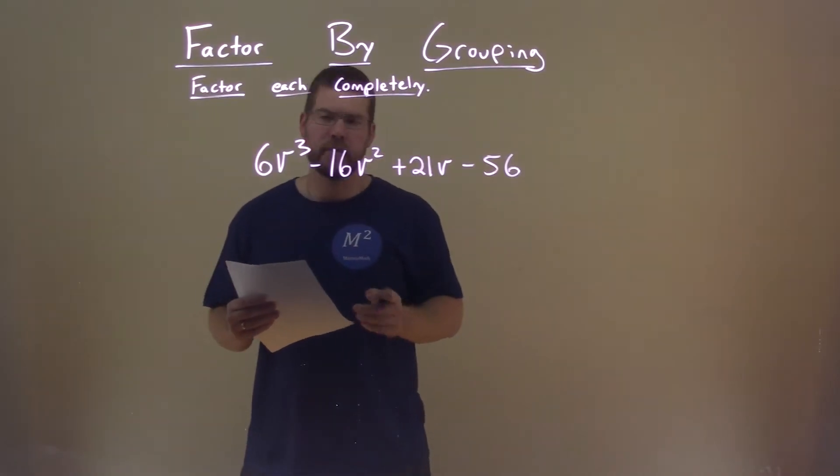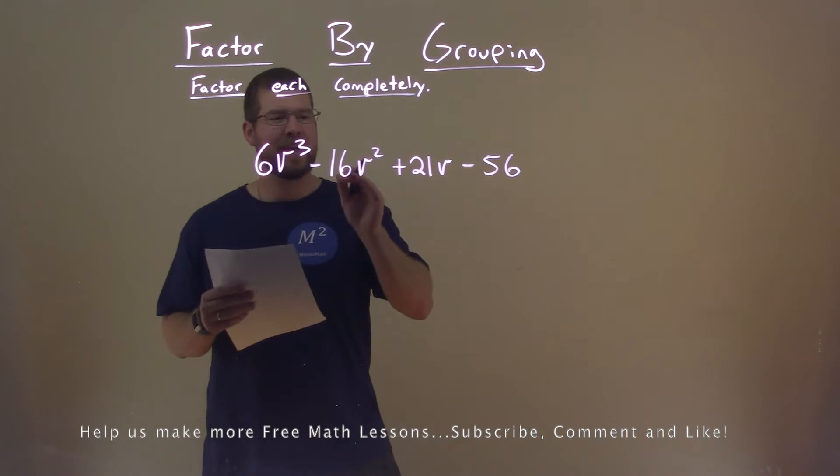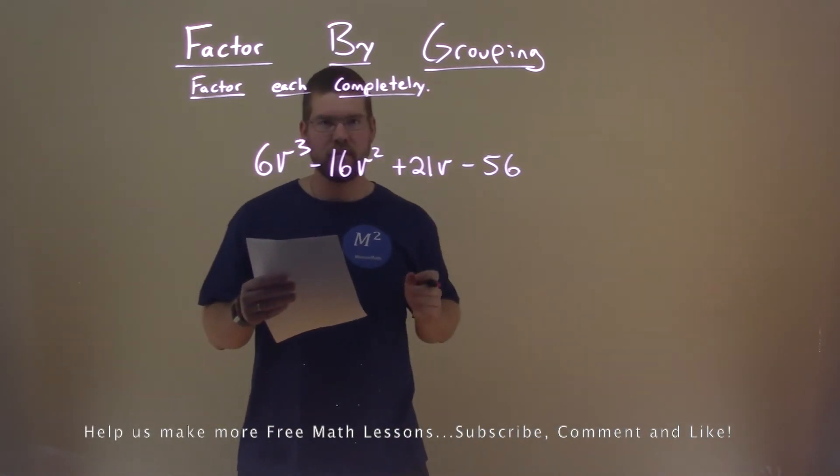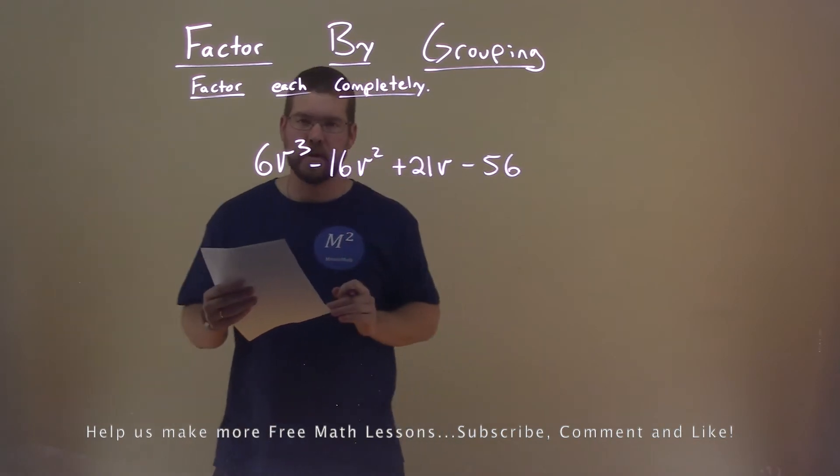We're given this problem right here: 6v³ - 16v² + 21v - 56. And we want to factor this completely.